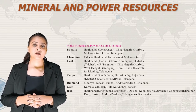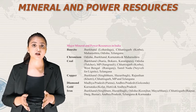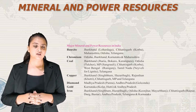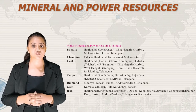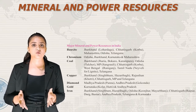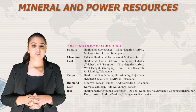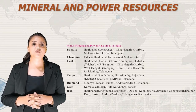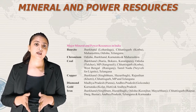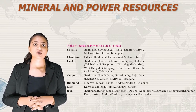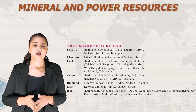Chromium is found in Odisha, Jharkhand, Karnataka and Maharashtra. Coal is found in the Jhariya, Bokaro and Karampura regions of Jharkhand; the Talcher region of Odisha; the Singrauli region of Madhya Pradesh; the Korba region of Chhattisgarh; the Raniganj region of West Bengal; and in Tamil Nadu we have Neyveli for lignite, and Telangana also has coal deposits.